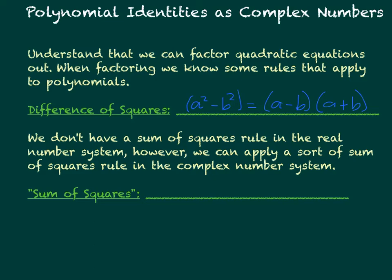What I mean by this is if we are given a squared plus b squared, we can factor that out into a plus bi times a minus bi. So I call this the sum of squares rule, but it only applies to the complex number system because we have to have an i in there. So if there is an i, then that means it has to be a complex number.